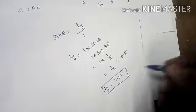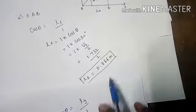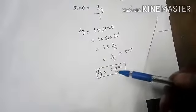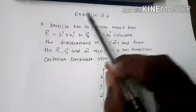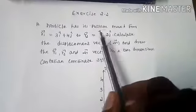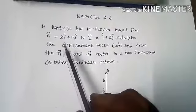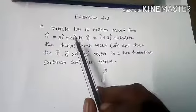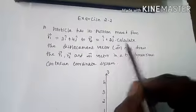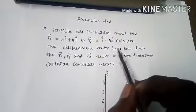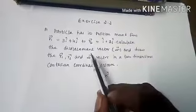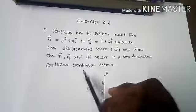So the length of the x component is 0.866 meters and the length of the y component is 0.5 meters. Next is Exercise 2.2. The question is: a particle has its position moved from R1 vector equal to 3i-cap plus 4j-cap to R2 vector equal to i-cap plus 2j-cap. Calculate the displacement vector ΔR and draw R1, R2, and ΔR in a two-dimensional Cartesian coordinate system.